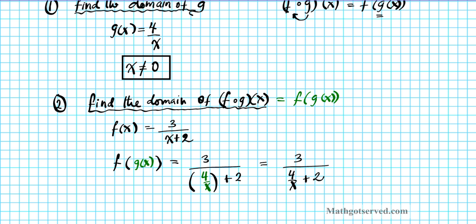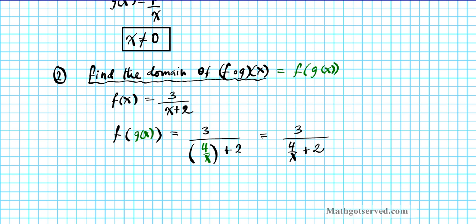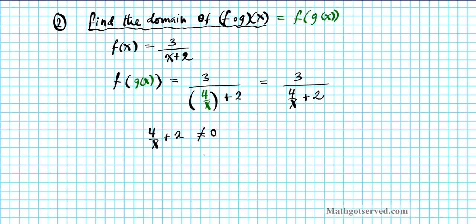Now I can simplify this further, but that's not necessary. Remember, we want to find the domain. So what is the domain of this function right here? We have a rational function. So what you do is you take the denominator, 4 over x plus 2. The denominator cannot be what? The denominator cannot be zero. So we solve this equation, which will tell us a second restriction on x that we need to consider.